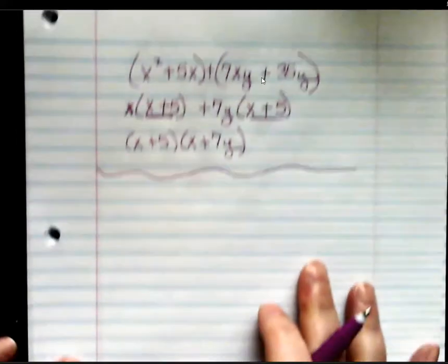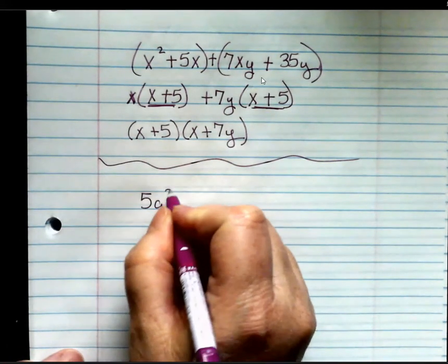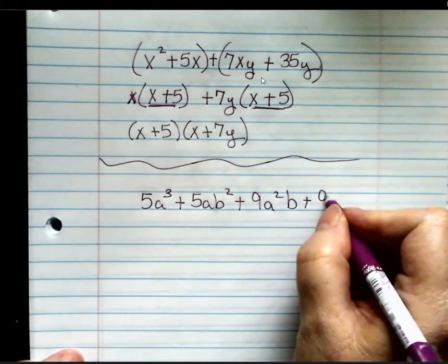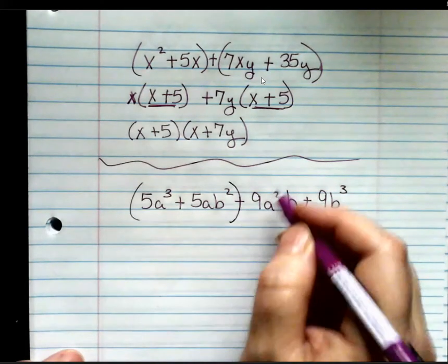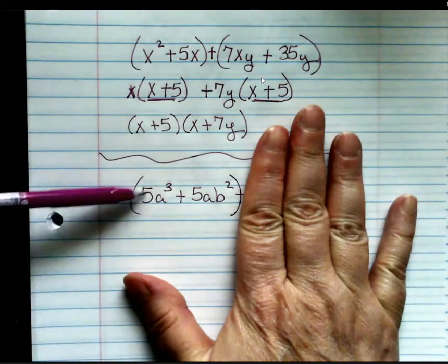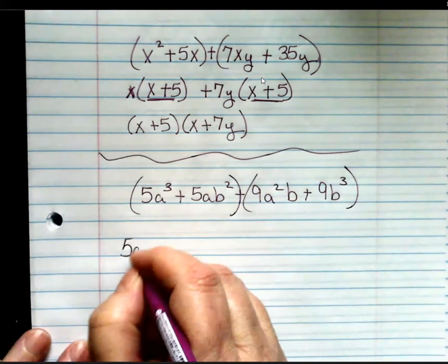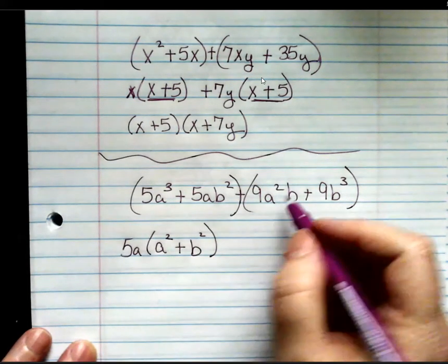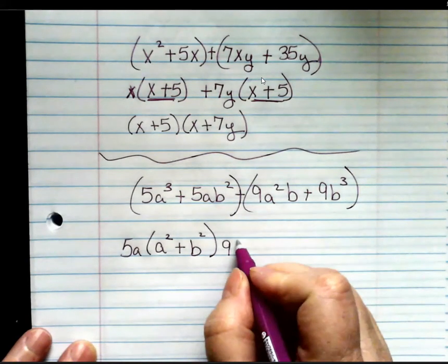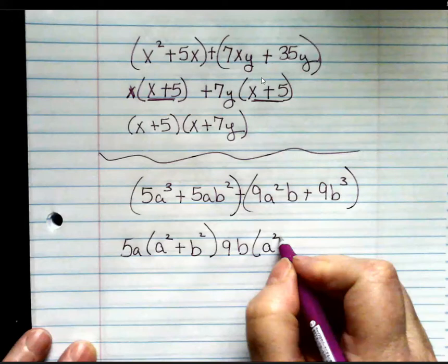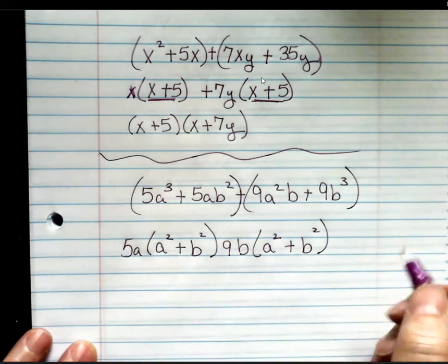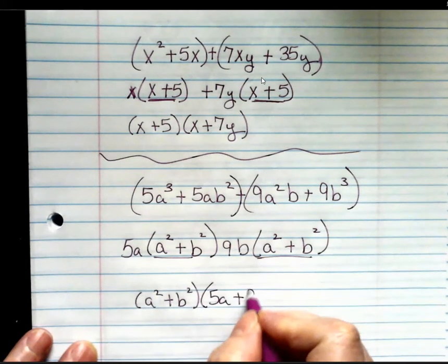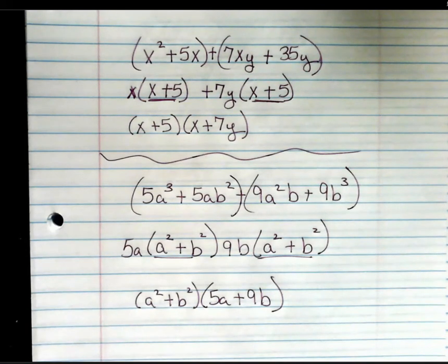Let's do one more. So, I'm going to group the first two and the second two together. I can take out a 5 and an a, leaving me with a squared plus b squared. Here, I can take out a 9b, leaving me with a squared plus b squared. That's my common factor to pull out. And what's left over is 5a plus 9b. And that's factoring by group. Thank you.